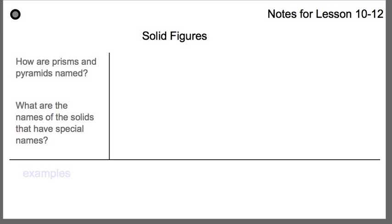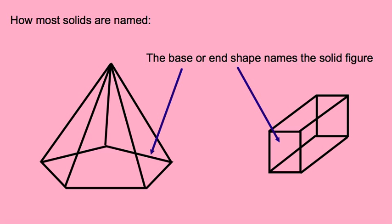Here are our notes for lesson 10-12, solid figures. How are prisms and pyramids named? And then what are the names of the solids that have some special names? It seems like a lot, but really it's kind of minimal. So here's how most solids are named: most solids are named based on their base or their end shape.